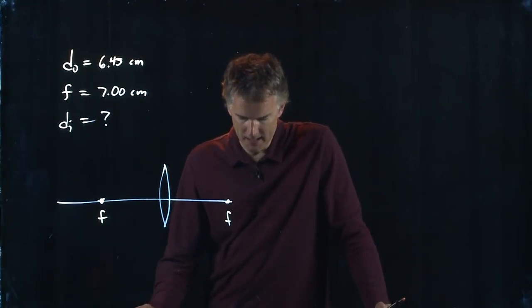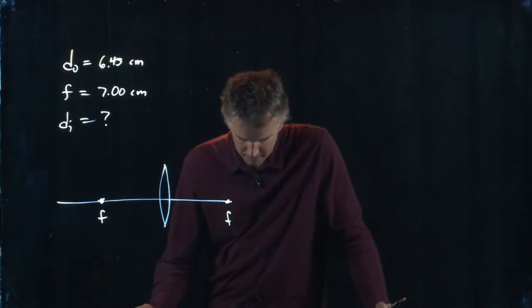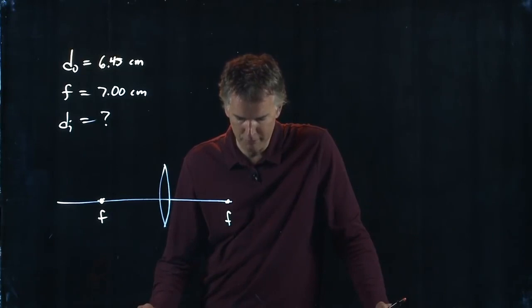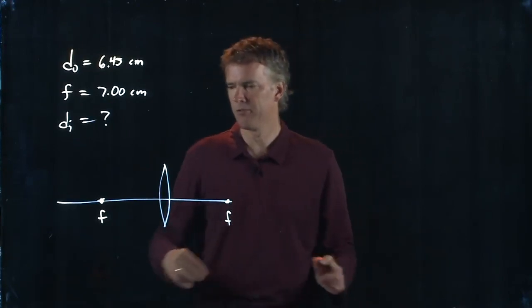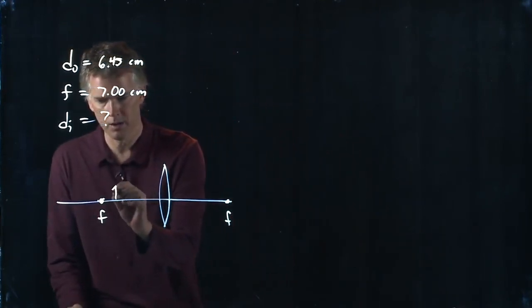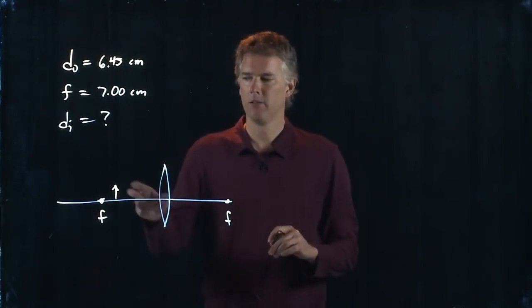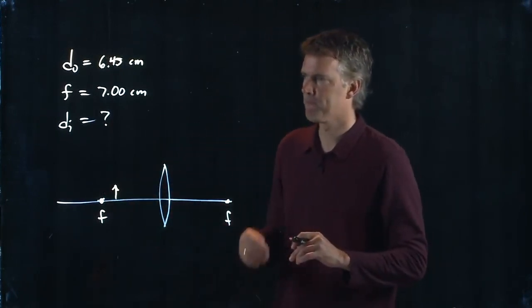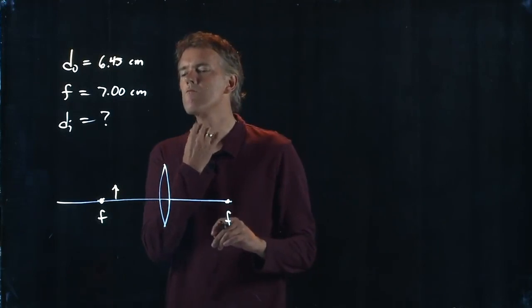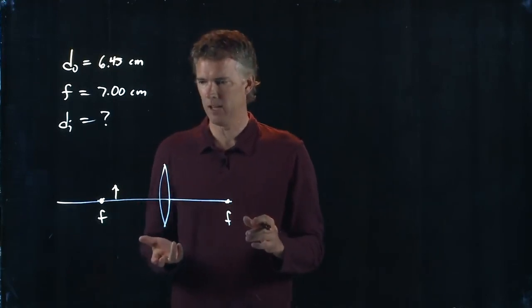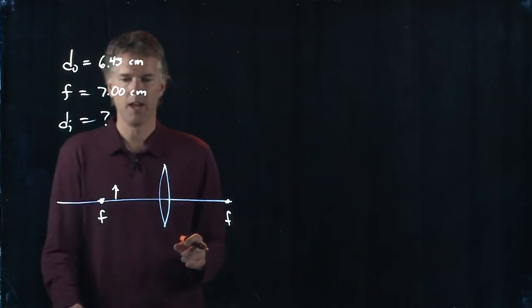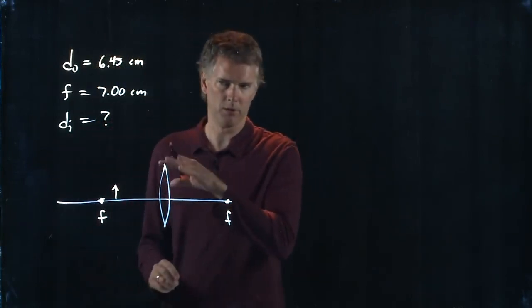Now they tell us that the insect is placed 6.45 centimeters from the lens and so the insect is in fact closer to the lens than that focal spot F. So we have to follow our rules again for determining where the image is and then we'll use a thin lens equation to do the calculation.